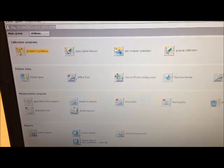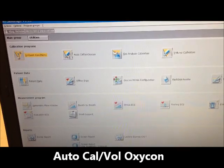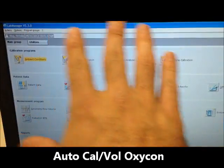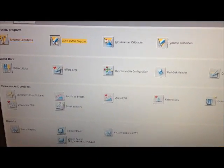After the 15 minute warm up you want to hit Auto Calfall Oxycon. It's this icon right here. After the 15 minute warm up this whole screen pops up and this is what you're working with. You want to click this button. This is the screen you'll see.